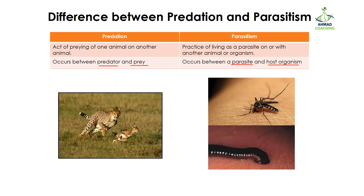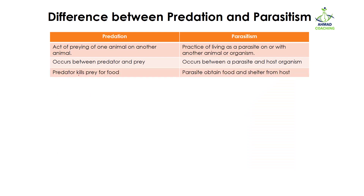The organism on which the parasite is living is known as the host organism. For example, in this picture you can see the skin of a human — the human is the host, while the parasite is transferred from the mosquito inside the body of the human. Similarly, the leech is a parasite feeding on the blood of the human, living outside the body.